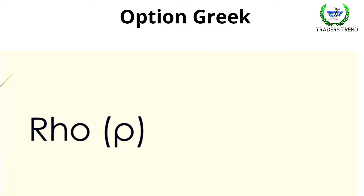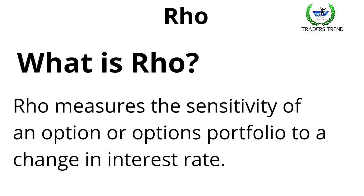Rho is the fifth parameter for the option Greeks. Rho measures the sensitivity of an option or options portfolio to a change in interest rate. It reflects the interest level for a particular strike — whether call or put — and is therefore called Rho.